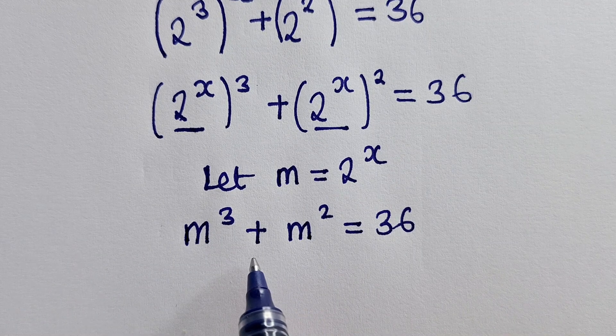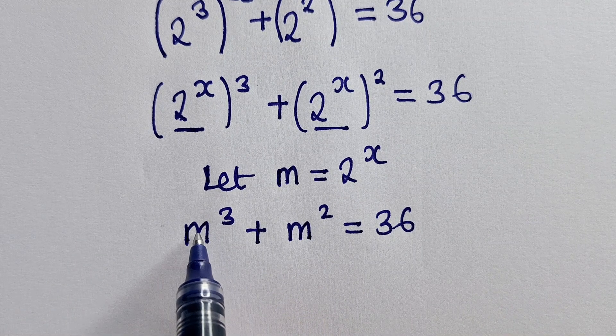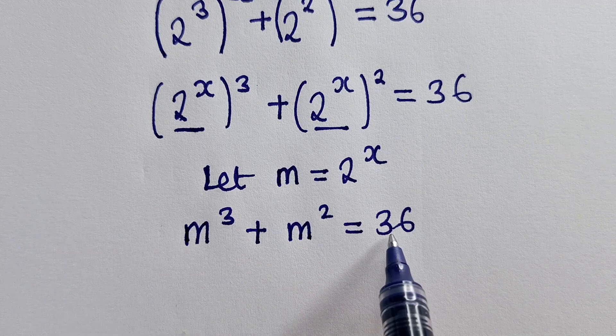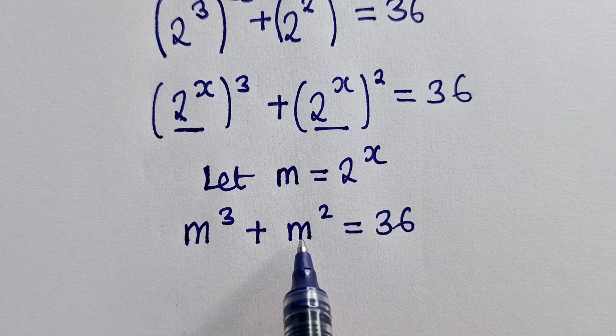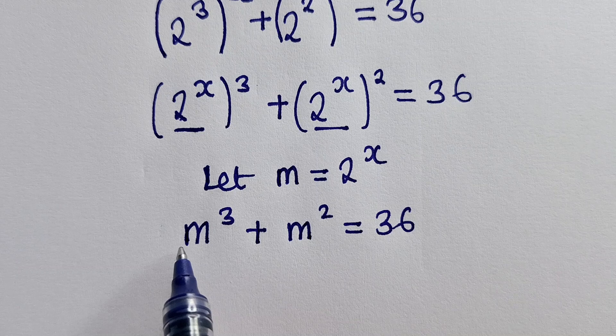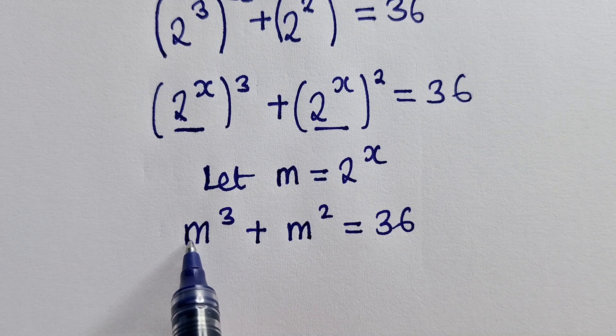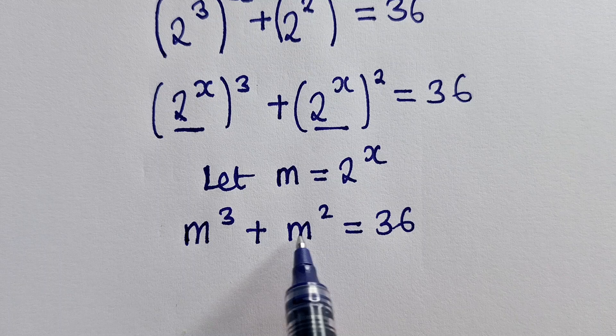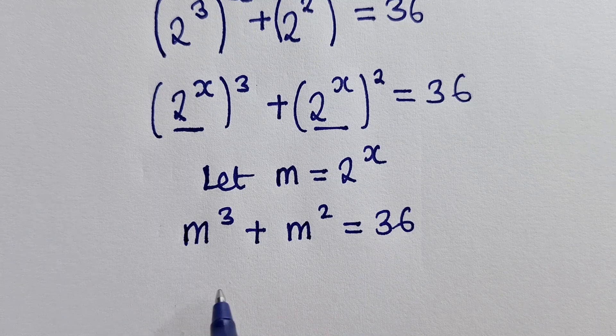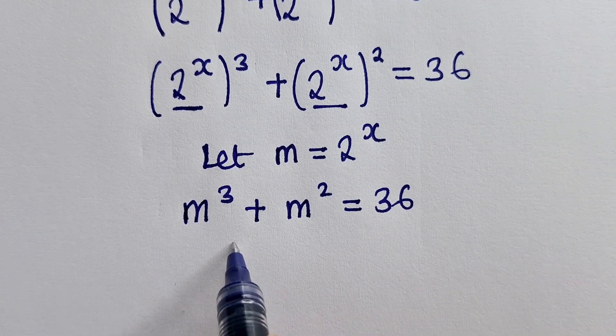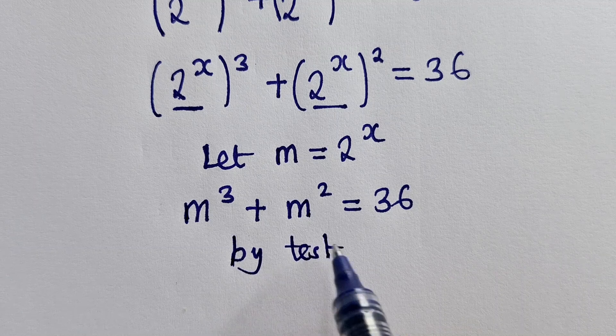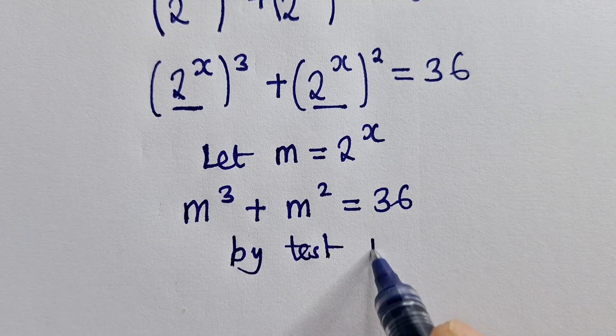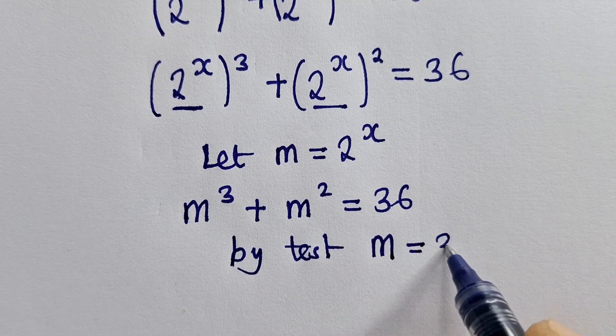I'm going to solve by testing. So I'll start with 1, I put 1 here, 1 here, and try to solve if it will give me 36. No, I put 2, 2, it's not working out. I'll put 3 here, it's a 27, 3 here, it's a 9, 9 plus 27, it's giving me 36. So I know by testing, by testing, that the value of m is equal to a 3.